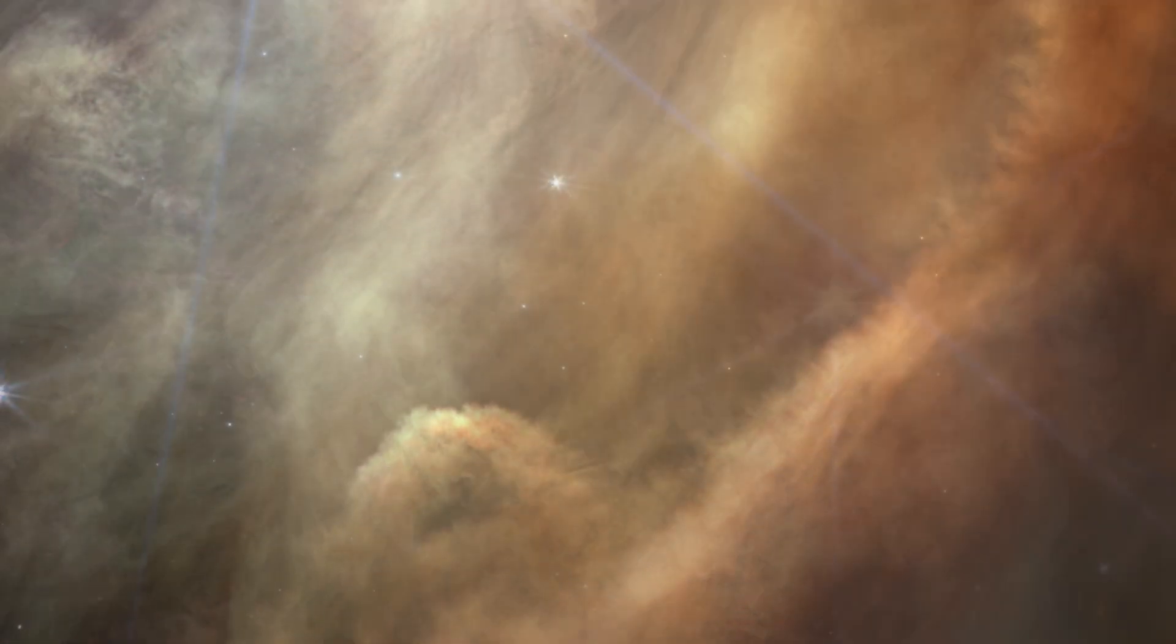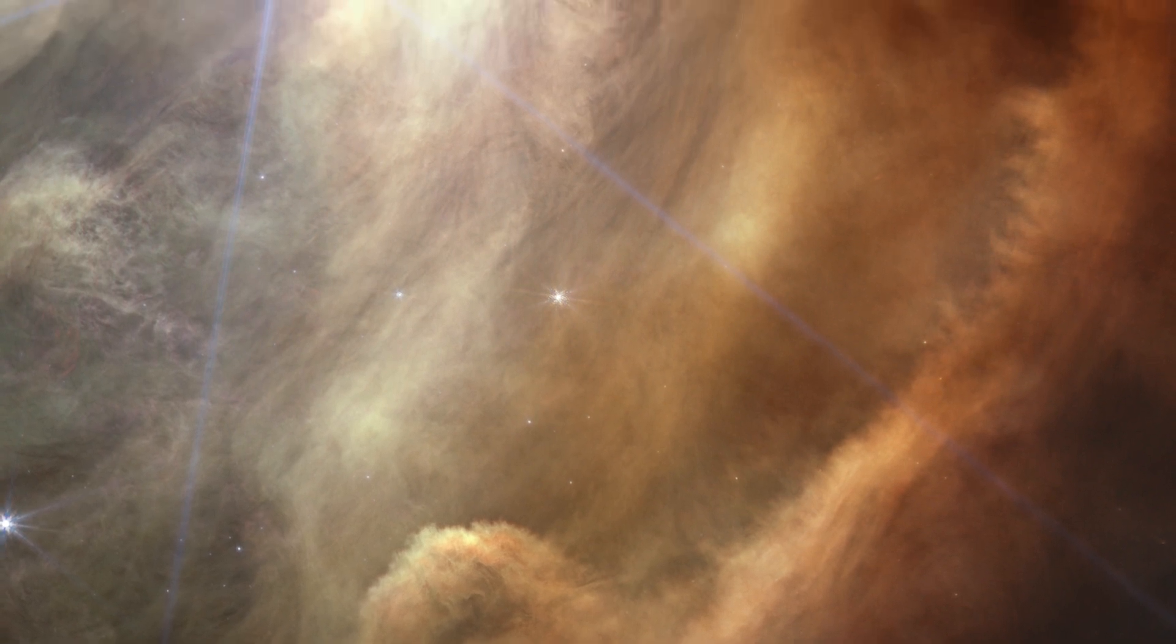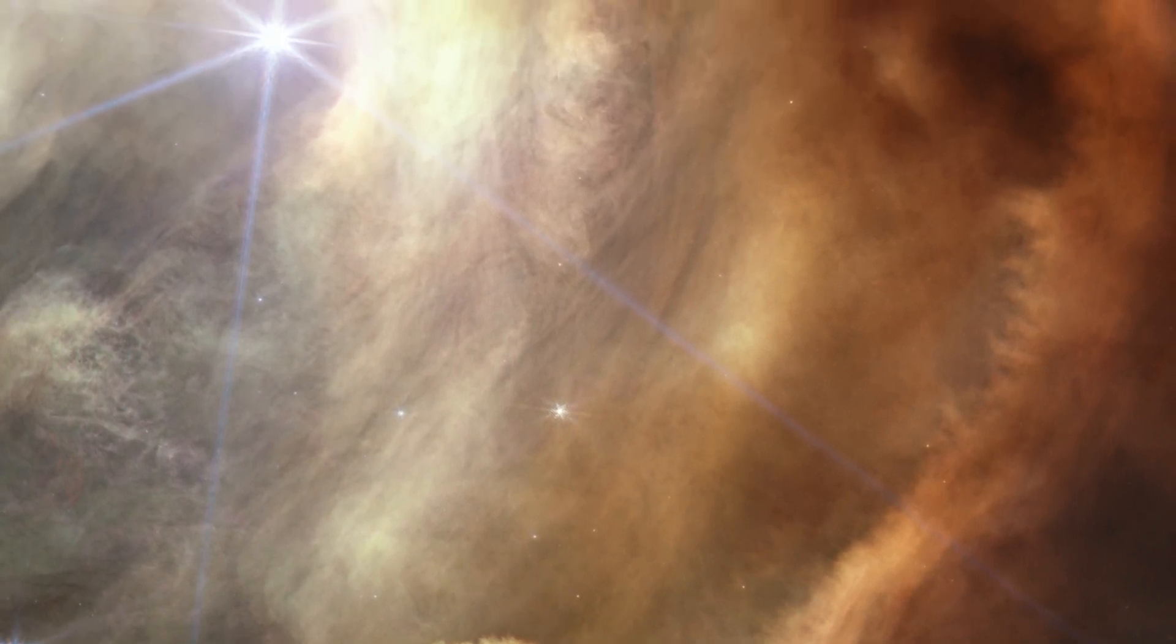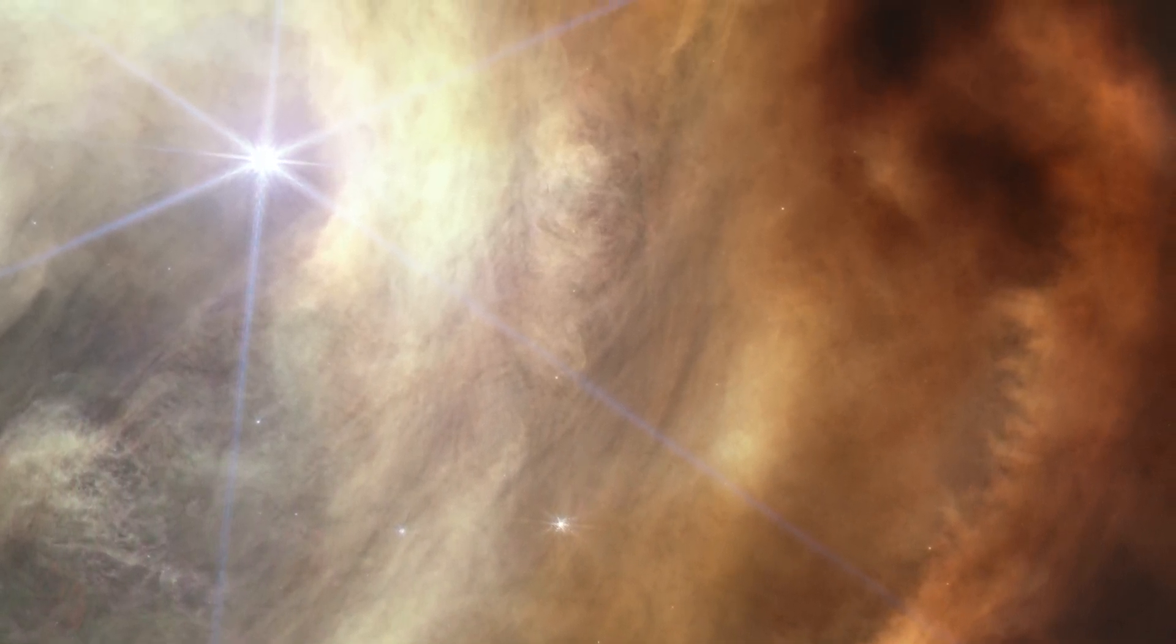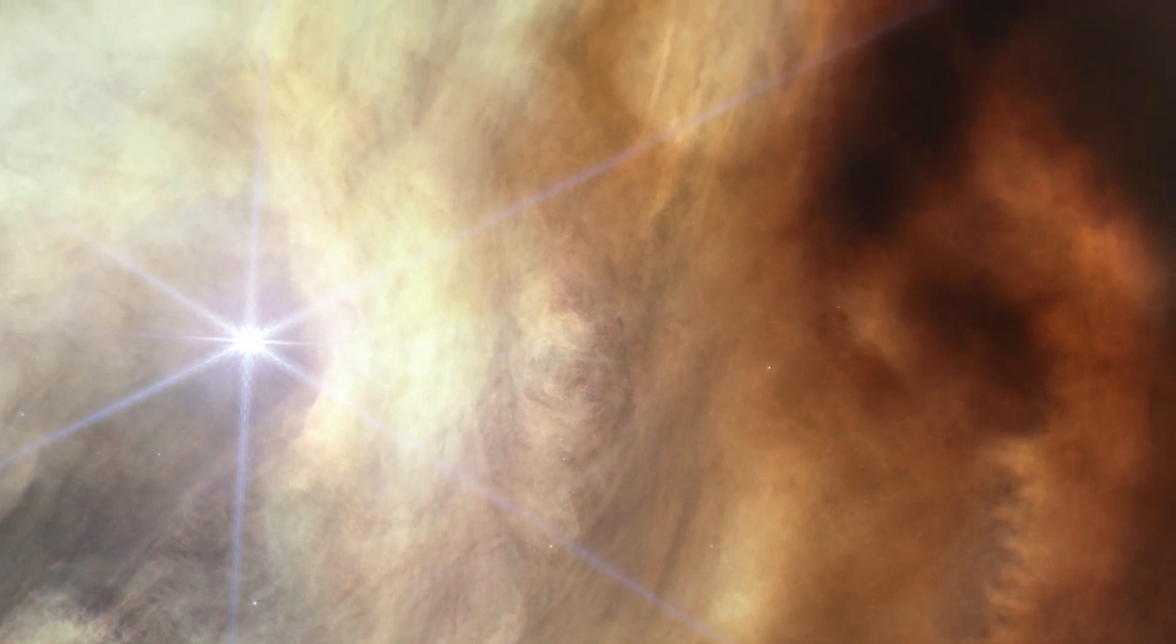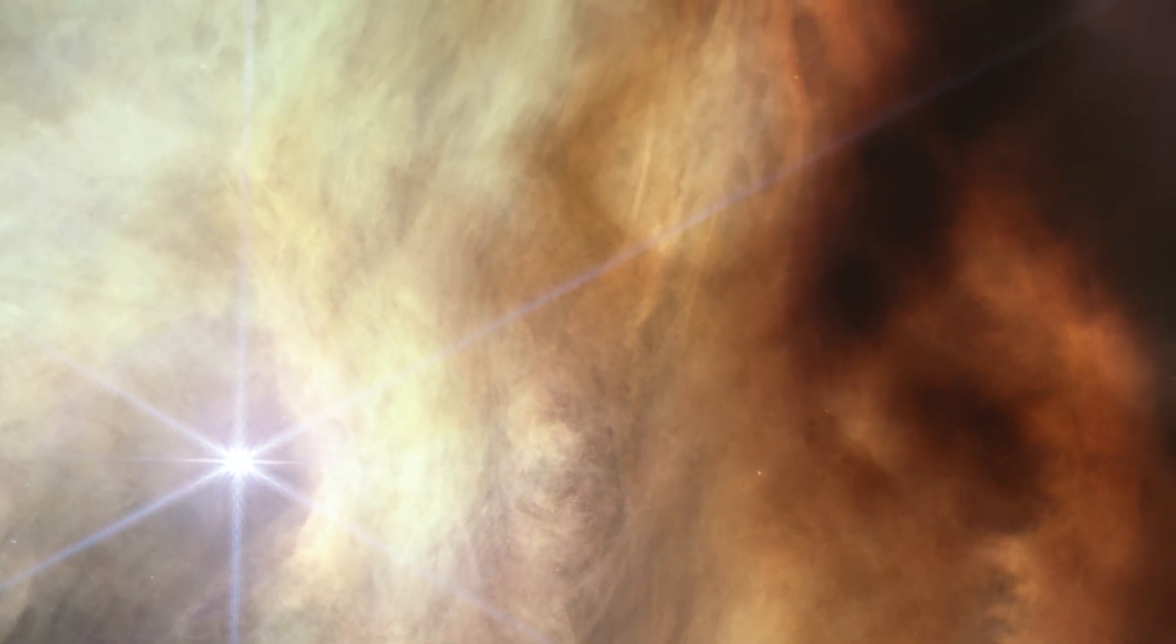The yellow-orange color comes from tiny sooty grains that astronomers call polycyclic aromatic hydrocarbons. Streamers of gas and dust form structures and textures unlike anything we have seen before.